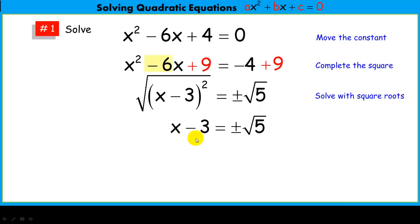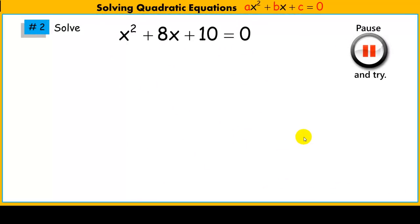Last thing is to get x alone. We add 3 to both sides. We have two solutions: x equals 3 plus root 5 and x equals 3 minus root 5. And it's common to write it in this form, 3 plus or minus root 5. Okay, why don't you guys give that one a shot.